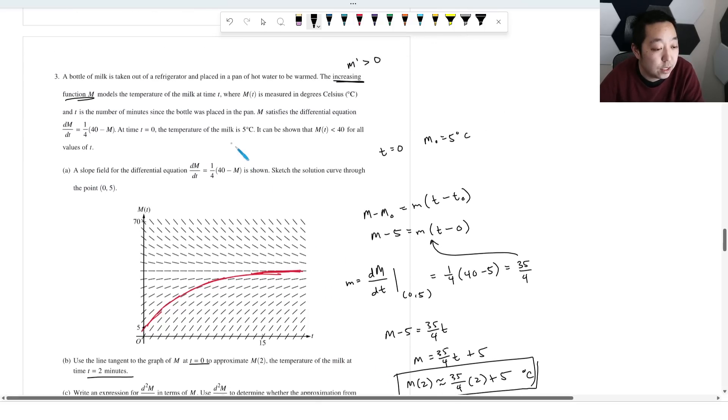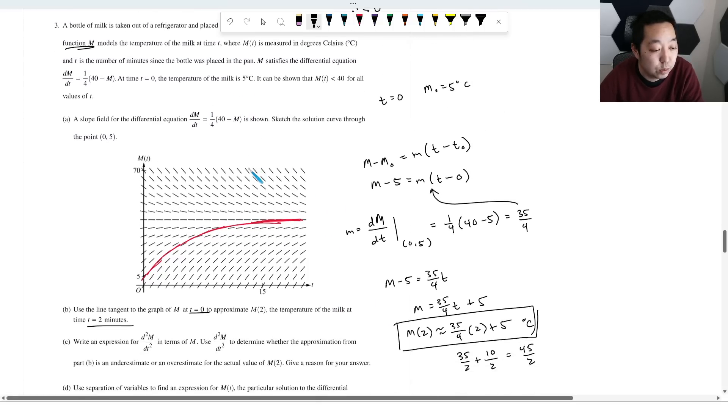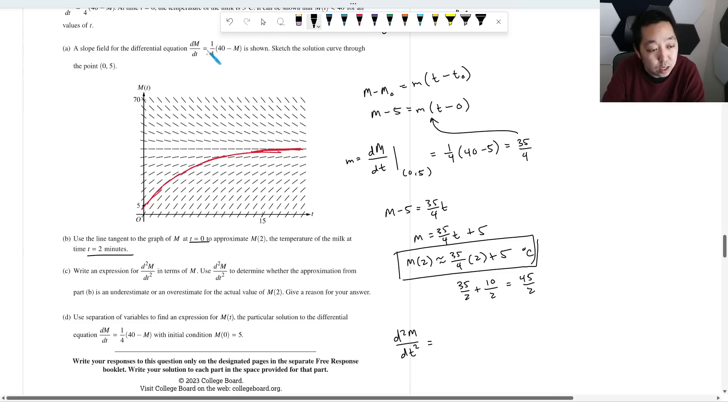So when I do the second derivative, I'm going to take the derivative of this guy right here. One quarter, 40 minus, and the derivative of M is just dM/dT. One quarter times the derivative of this, derivative of 40 is zero. And then that's minus dM/dT. And derivative M is dM/dT.